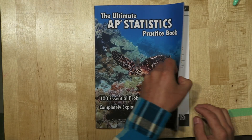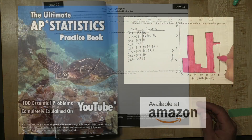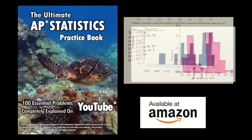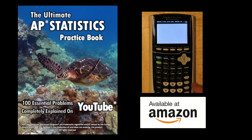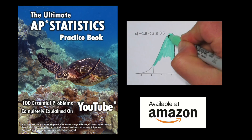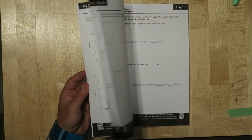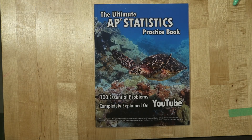If you liked my explanation of this problem, you might like my book, The Ultimate AP Statistics Practice Book. It has 100 problems in it, and every single problem has a YouTube video explaining every single step, every single calculator command, everything. In fact, this problem right here is just like problem 31 from my book. I'll put a link to that video in the description. Also, if you're an AP stats teacher and you want a free copy of my book, just send me an email.